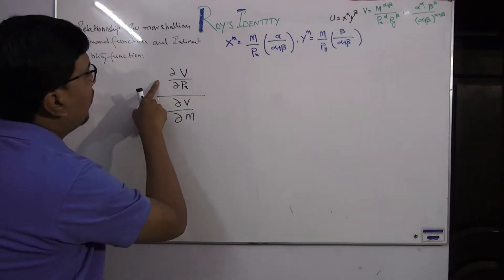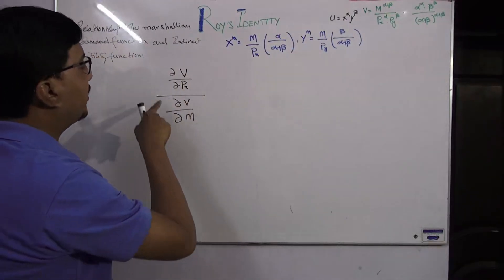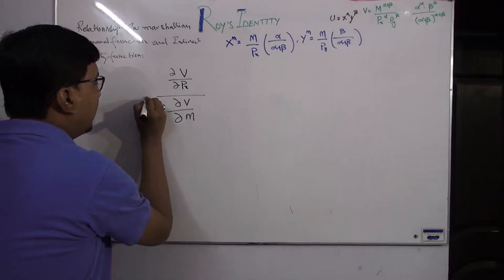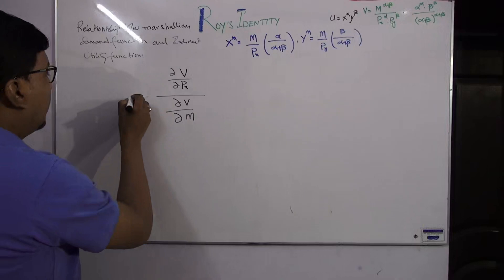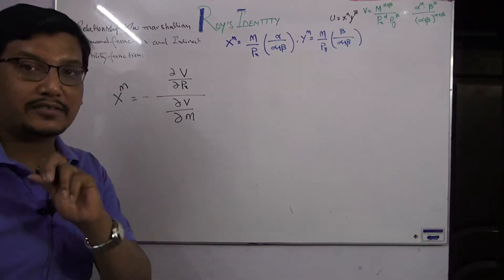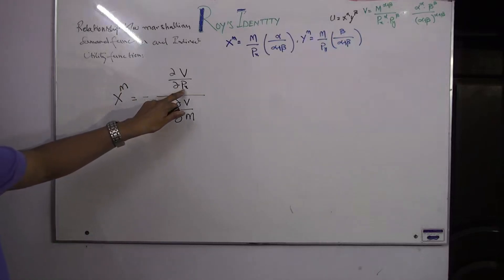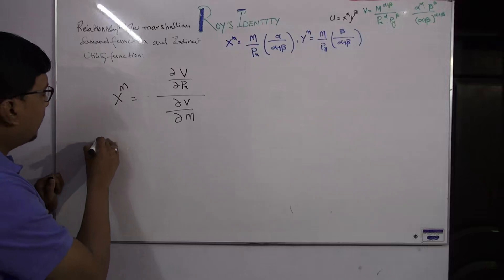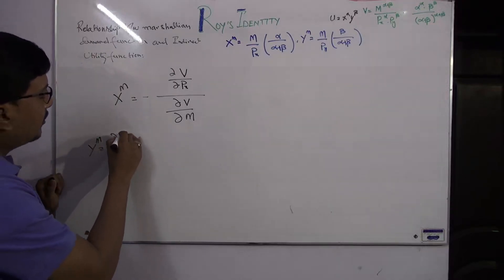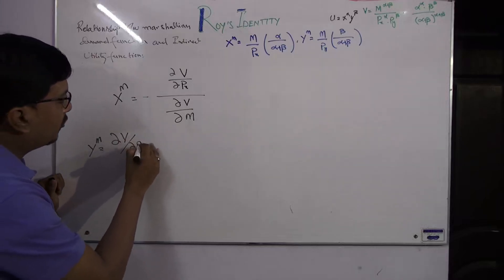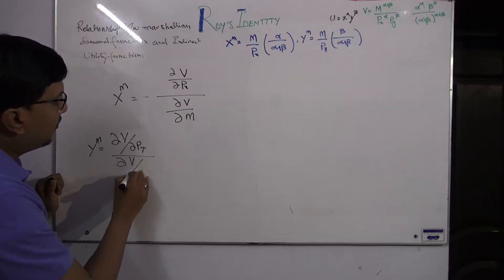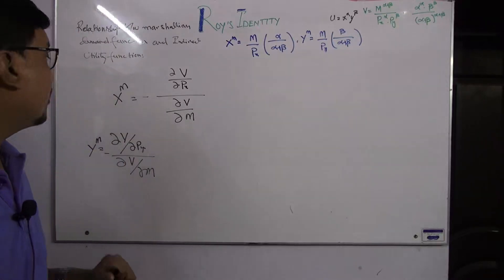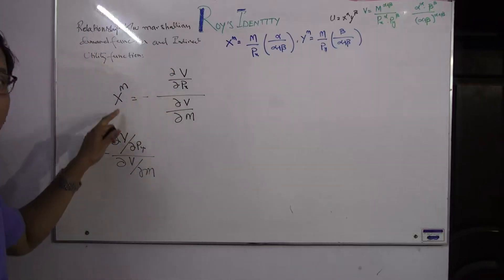We take the partial derivative of the indirect utility function with respect to px, divide by the partial derivative of the indirect utility function with respect to income m, and multiply by a negative sign. The negative of this term gives us the Marshallian demand function for x. Similarly, for the Marshallian demand function for y, we take the partial derivative with respect to py divided by the partial derivative with respect to m, and take the negative.